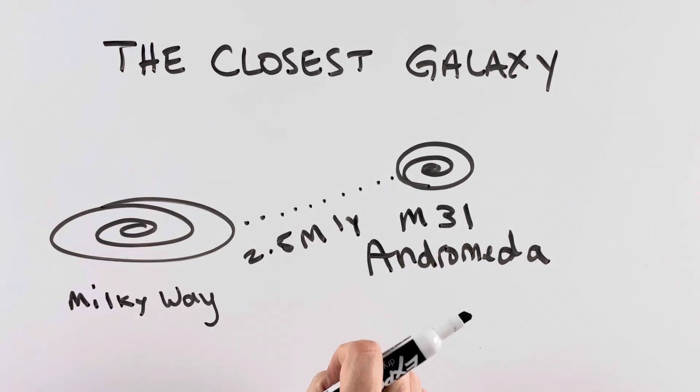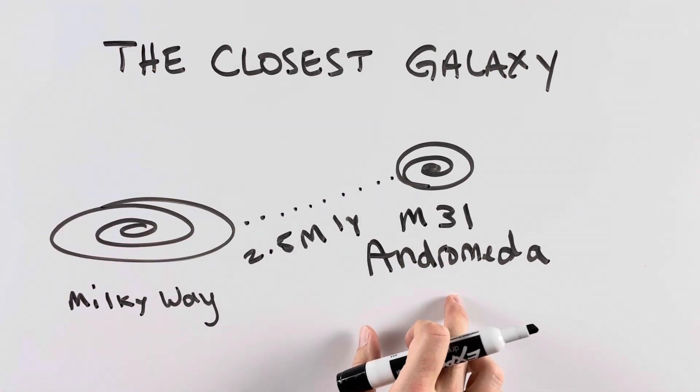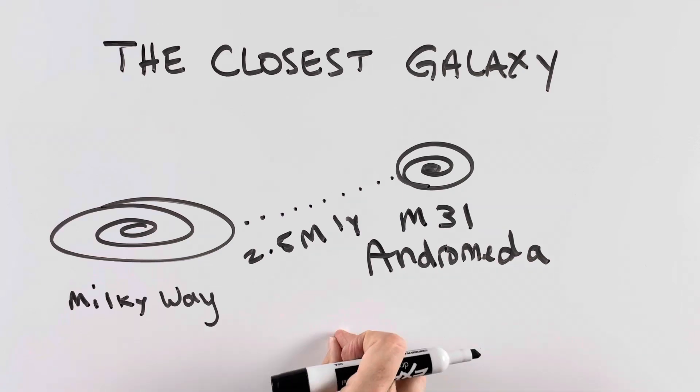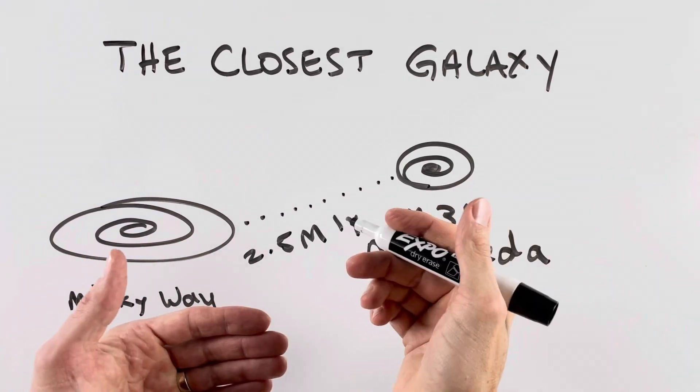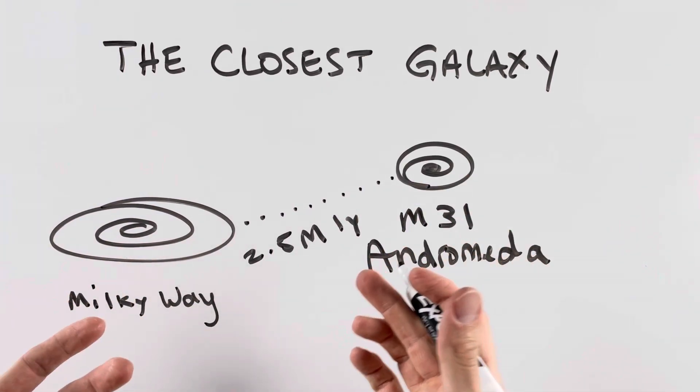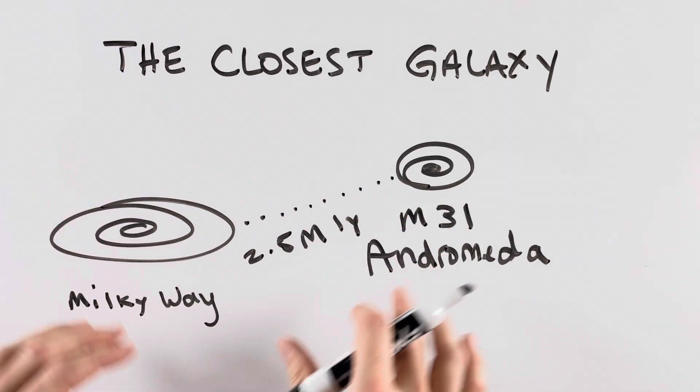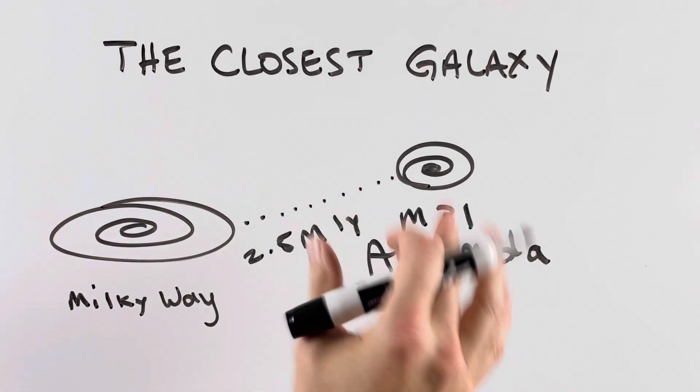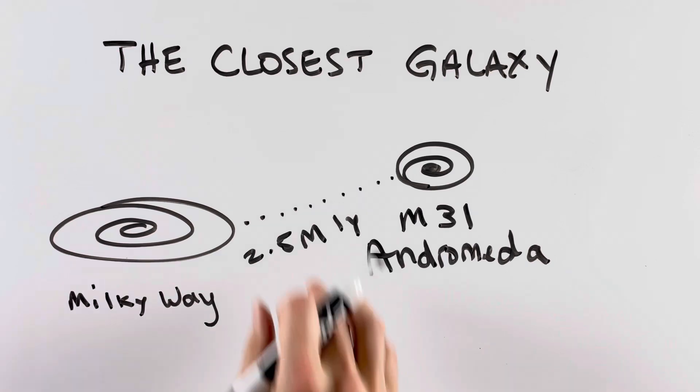And to be honest, it's kind of interesting that the Milky Way galaxy and the Andromeda galaxy are actually on a crash course for each other. We're moving towards one another and we're eventually going to collide, but don't worry, it's going to be billions and billions of years from now. Nothing for you to worry about.